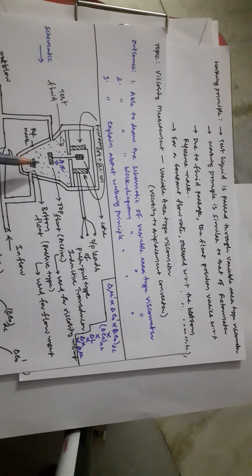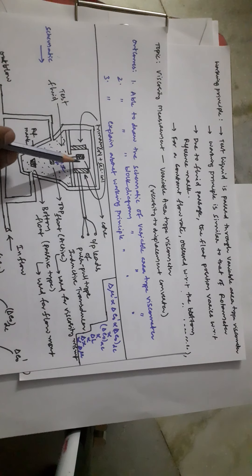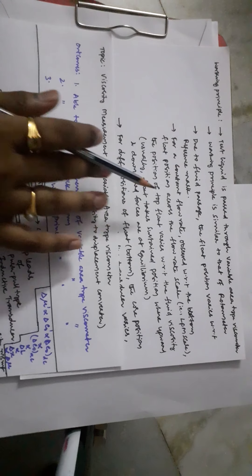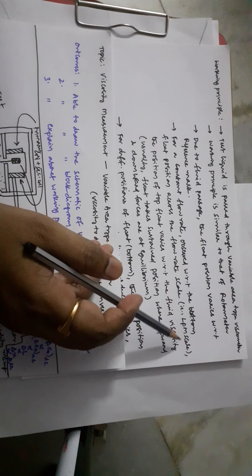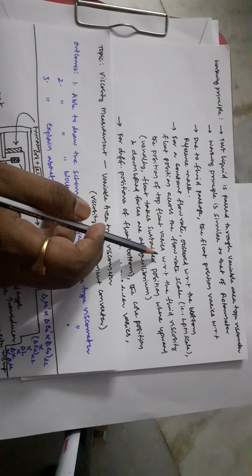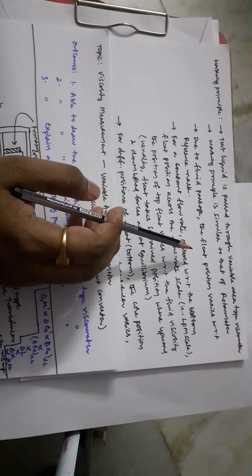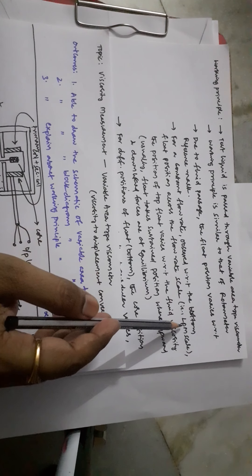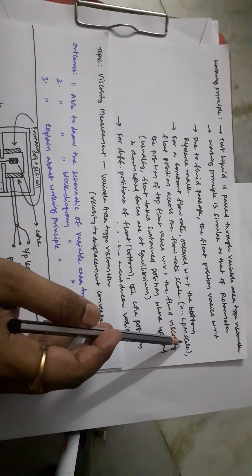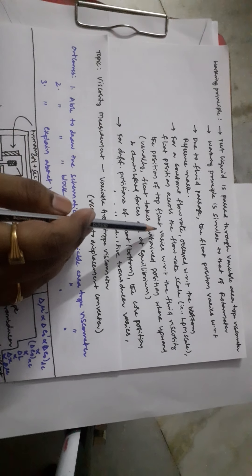The same equilibrium principle applies to the top float. For a constant flow rate observed from the bottom float position across the flow rate scale (LPM scale), the position of the top float varies with respect to fluid viscosity. When fluid passes, both floats vary their positions — the bottom float displacement corresponds to flow rate measurement, and the top float position corresponds to viscosity measurement.